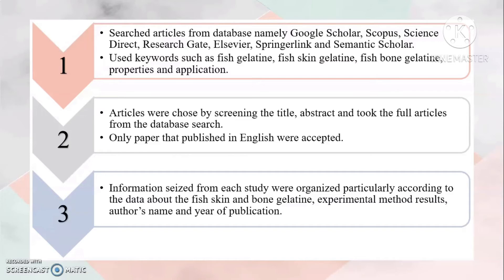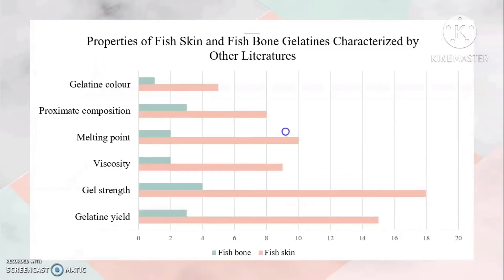Experimental method results are recorded by name and year of publication. Six methods were used by researchers: gelatin colour, proximate composition, melting point, viscosity, gel strength, and gelatin yield.